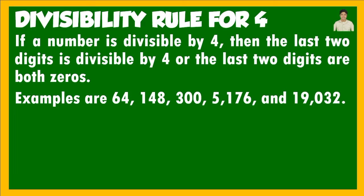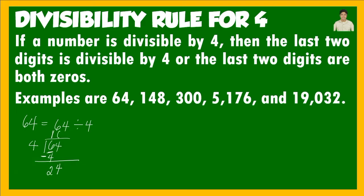Examples are 64, 148, 300, 5,176, and 19,032. For 64: using long division, 6 divided by 4 is 1; 1 times 4 is 4; subtract to get 2; bring down 4 to get 24; 24 divided by 4 is 6; 24 minus 24 is 0. Therefore 64 is divisible by 4 because the remainder is 0. Next, 148 divided by 4: 1 cannot be divided by 4, so we take 14.